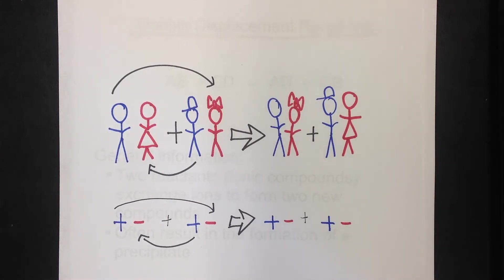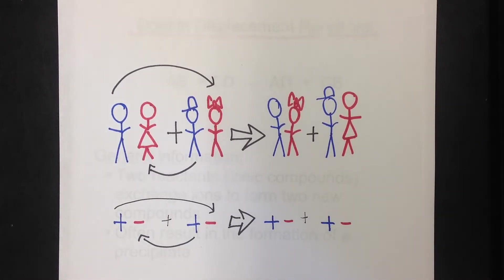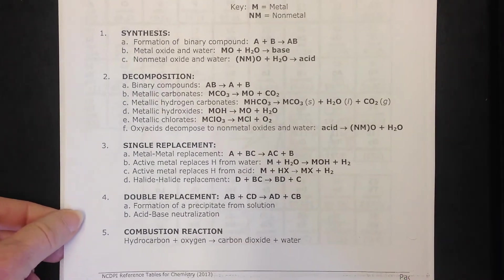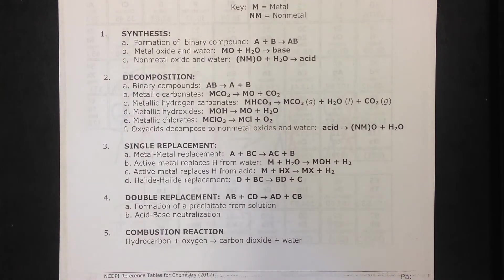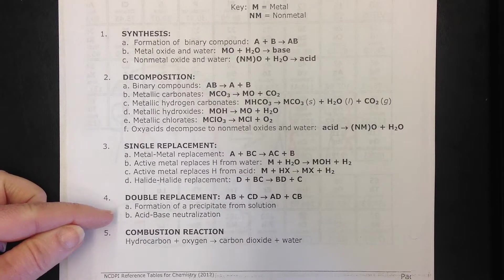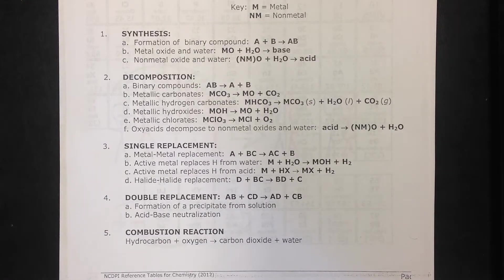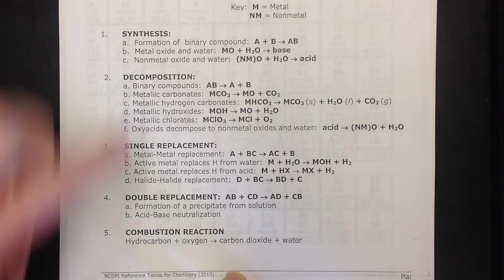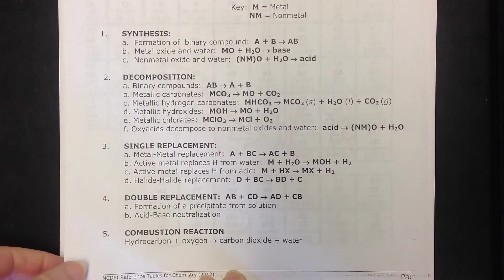These are a lot of fun — they might be my favorites. They look really nasty and long for beginning chemistry students, but if you know a few simple tricks, they're really easy. It's also helpful if you have your reference table packet in front of you. We're going to look at both types today: the general double displacement reaction, and a special type called acid-base neutralization reactions.